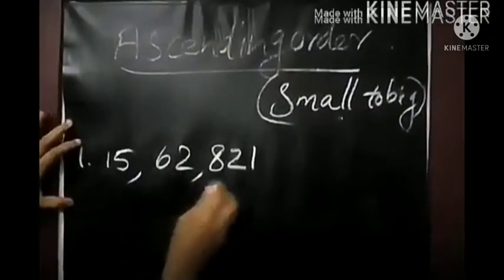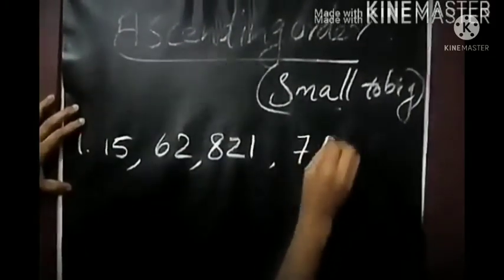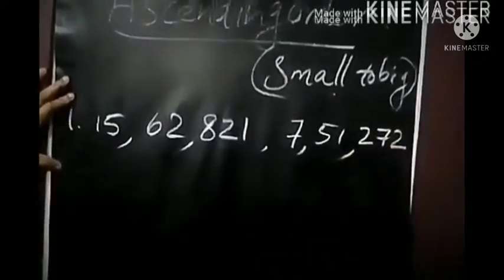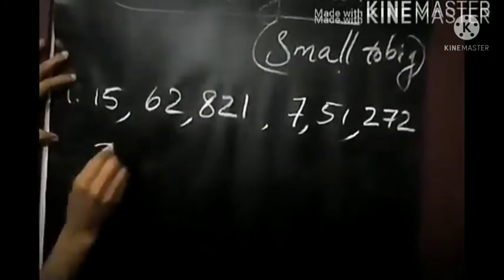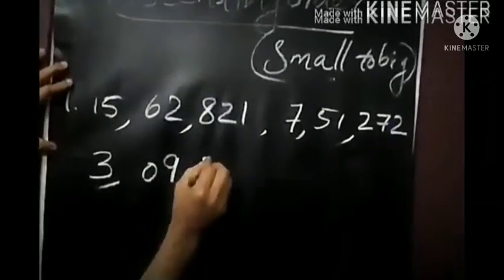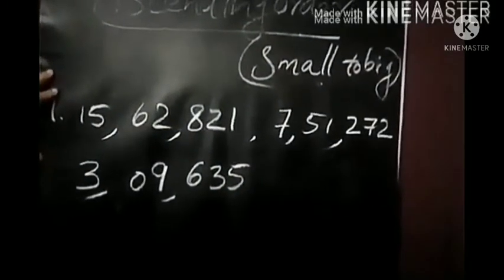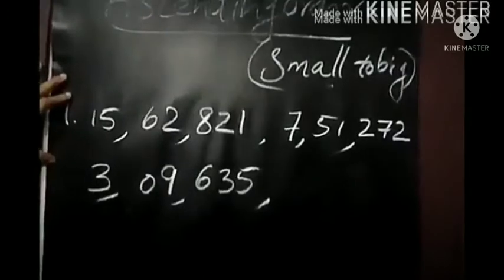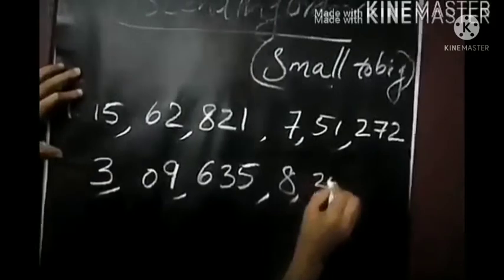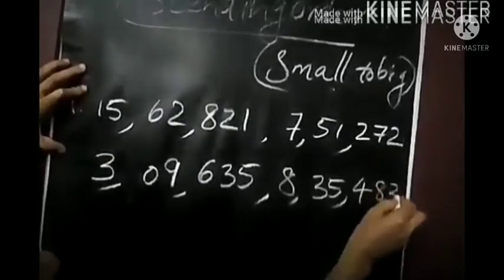For example, here are the numbers: 15,62,821 — then 7,51,272 — next 3,9,635 — and next 8,35,483.